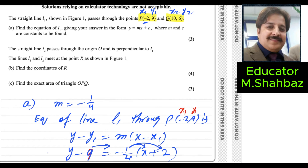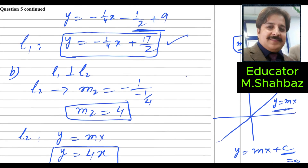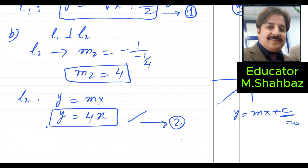Now we have two equations: equation 1 is y = -1/4·x + 17/2 for L1, and equation 2 is y = 4x for L2. Solving them simultaneously gives the point of intersection R. Equate the two equations: 4x = -1/4·x + 17/2.